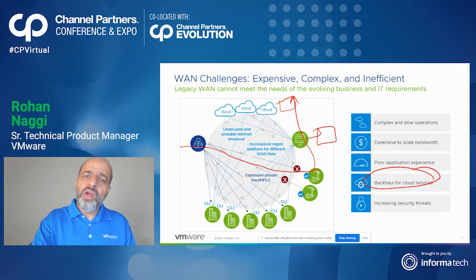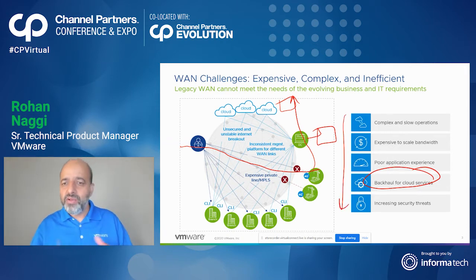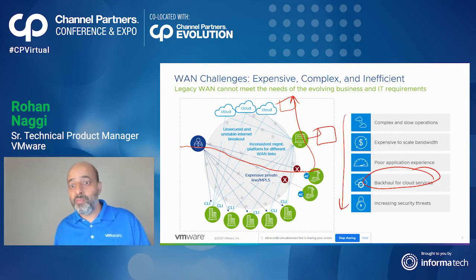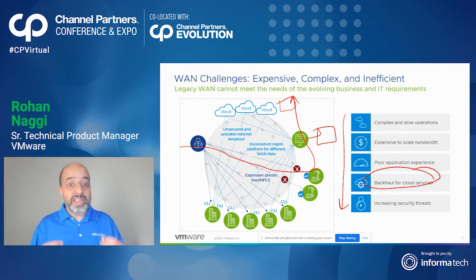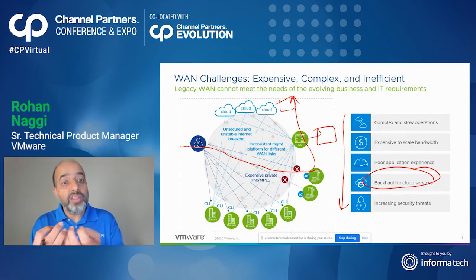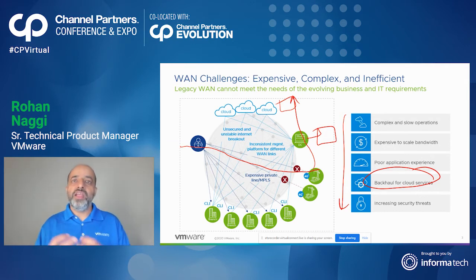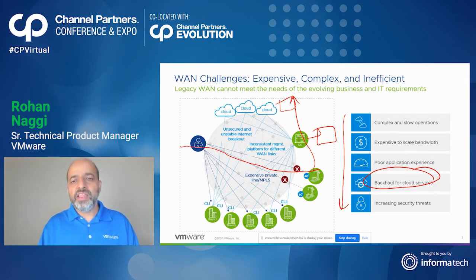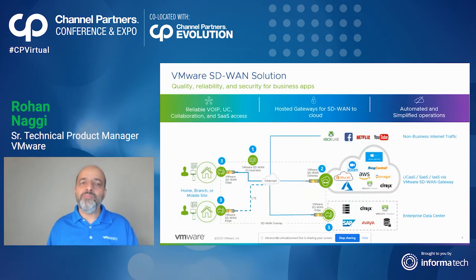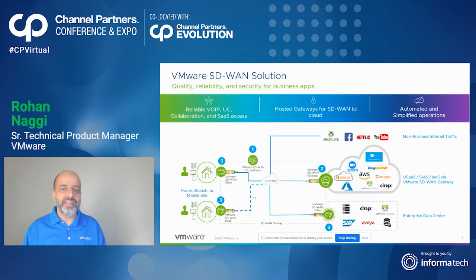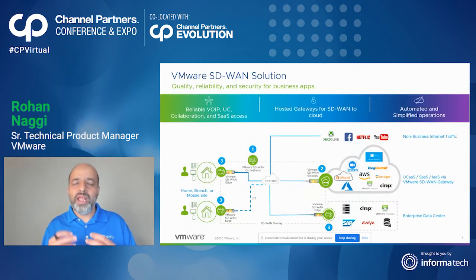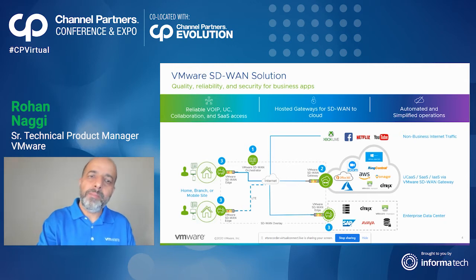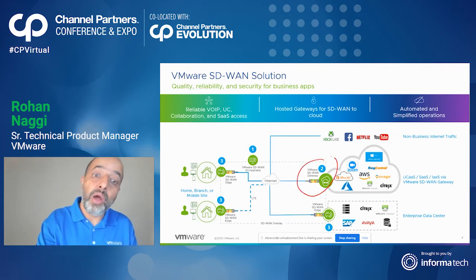This is the basic problem with the legacy approach, and it leads to other problems like increasing security threats, poor application performance, and scaling becoming a problem. The key here is the hub-and-spoke topology being used by this traditional architecture, which increases latency. And that's where VMware SD-WAN comes to play and solves this legacy approach by making it cloud ready.